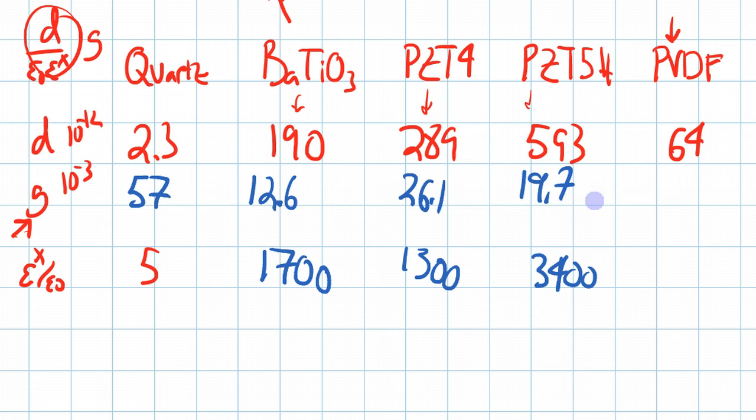And PVDF, which is a unique material actually. Did I say that's 30? This is not 64. This is 33. And its permittivity is 6. So it ends up at 380.